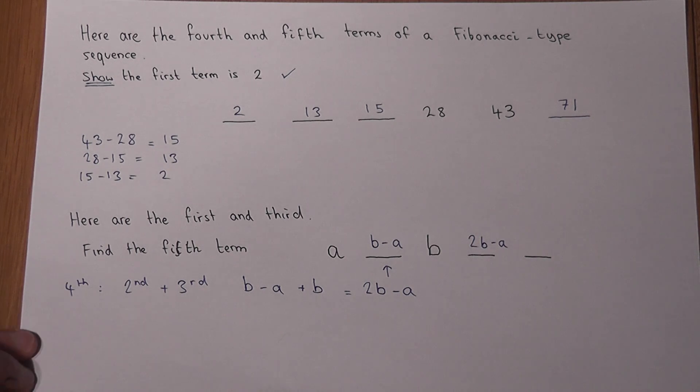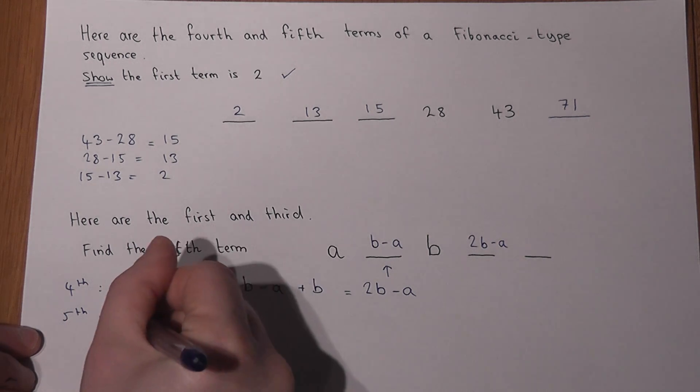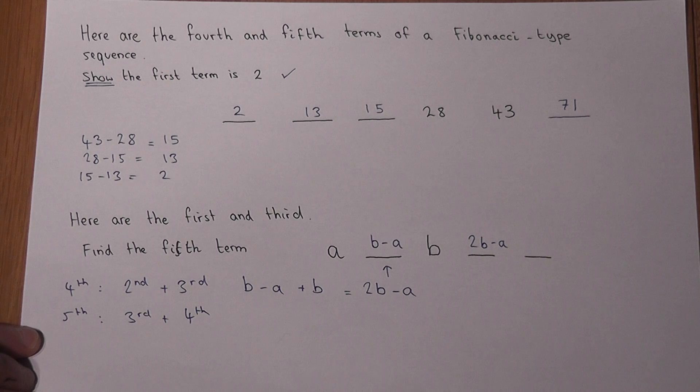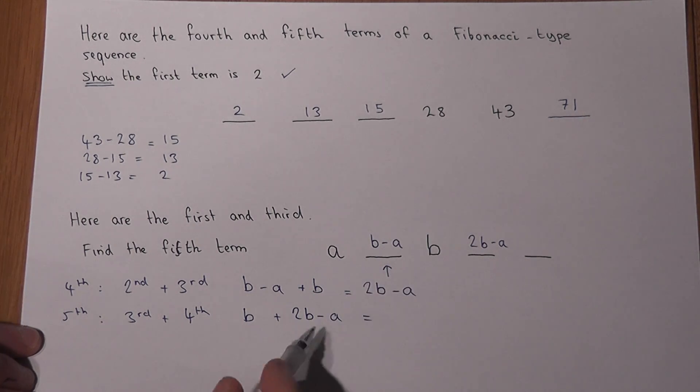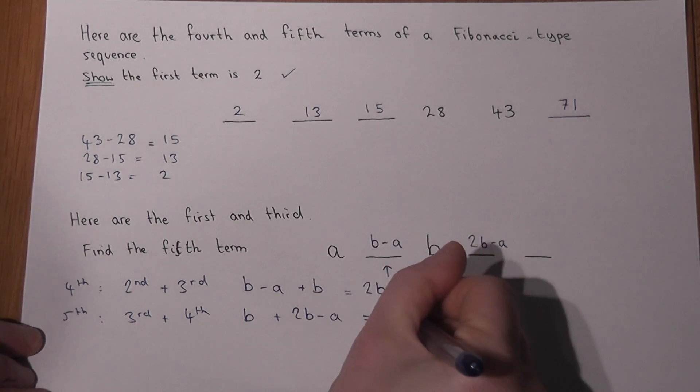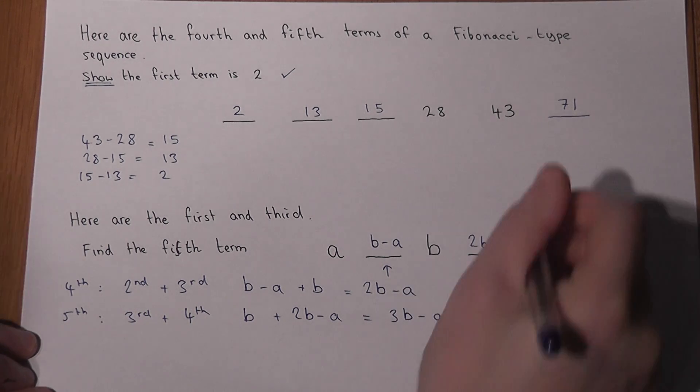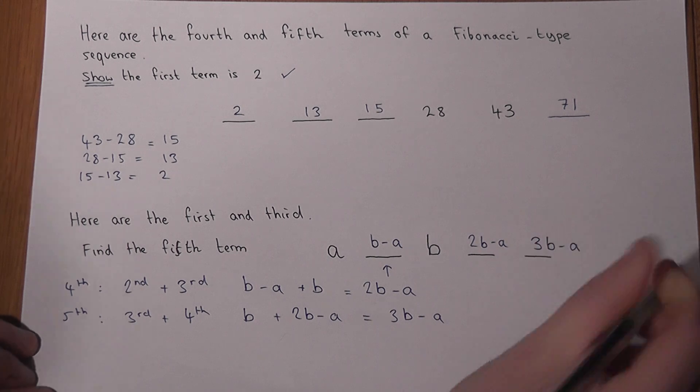And then last but not least, to find the fifth term, I just do the third plus the fourth. Well, the third is B. The fourth is 2B minus A. If I make this simpler, B plus 2B is 3B. There's a minus A there. So the fifth term in terms of B and A is 3B minus A.